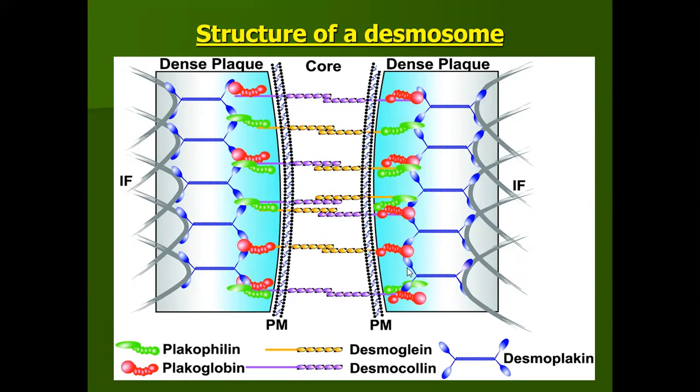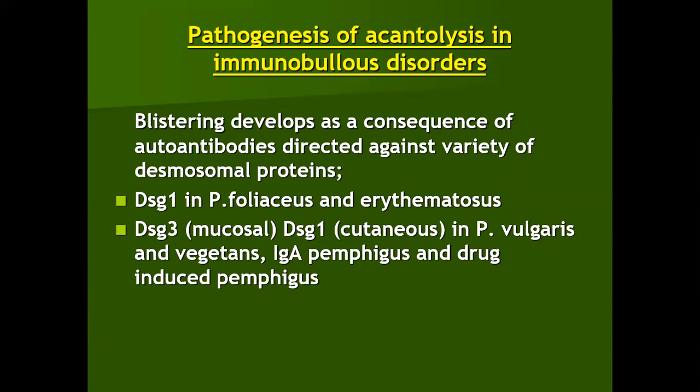Pathogenesis of acantholysis in immunobullous disorders: blistering develops as a consequence of autoantibodies directed against a variety of desmosomal proteins. Desmoglein 1 is the desmosomal protein target in pemphigus foliaceous and pemphigus erythematosus. Desmoglein 3, seen in mucosa, and desmoglein 1, seen in skin, are the two antigens seen in pemphigus vulgaris, pemphigus vegetans, IgA pemphigus, and drug-induced pemphigus.